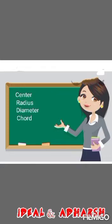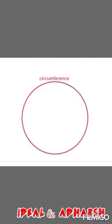First of all we want to know the circumference. Circumference is the distance around the edge of the circle.